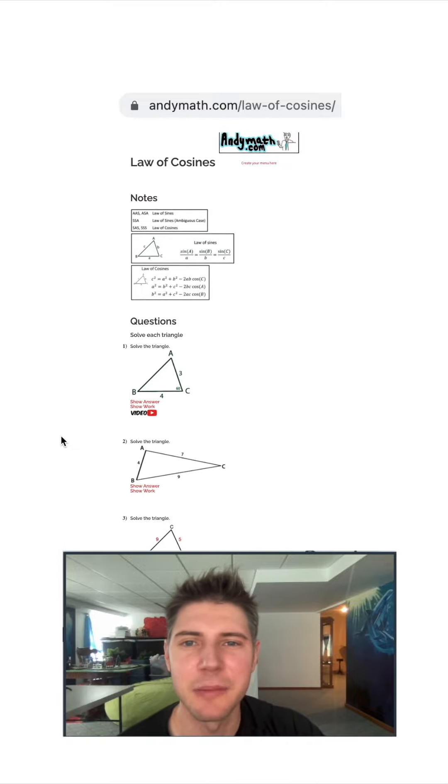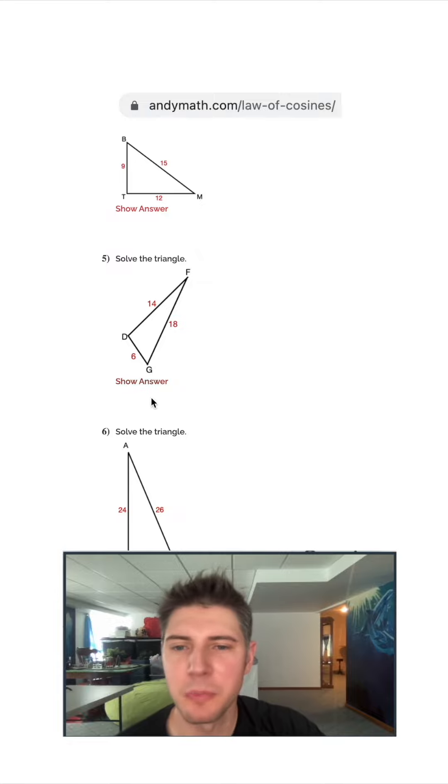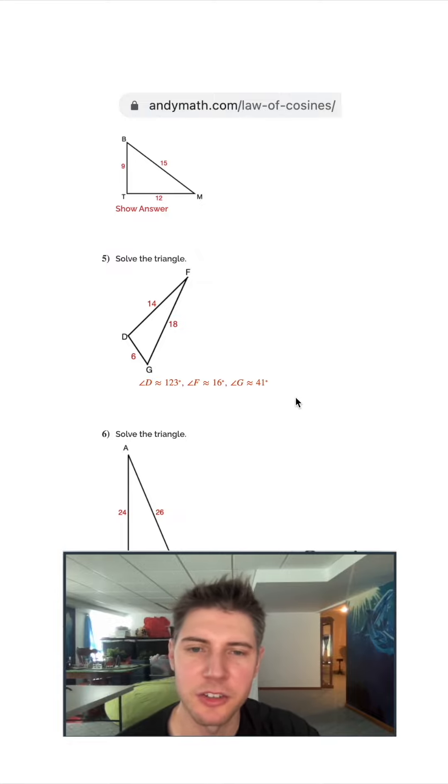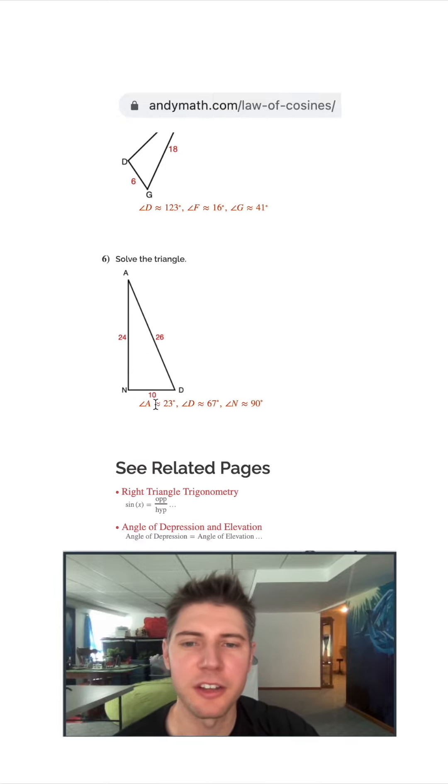You guys want to try more of these? I have this page on andymath.com. The name of the page is law of cosines. Here's the link right here. Number five is the problem we just did. We solve for D and we got 123. And then there's also the other angles are listed here. And you can try out some more of these.